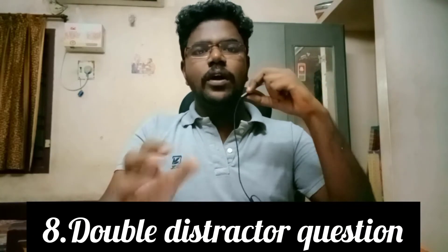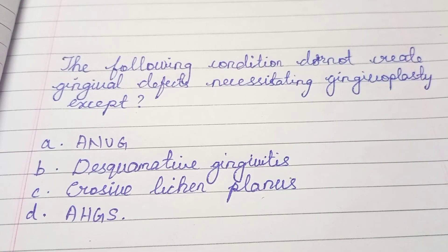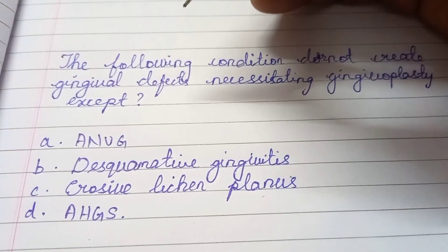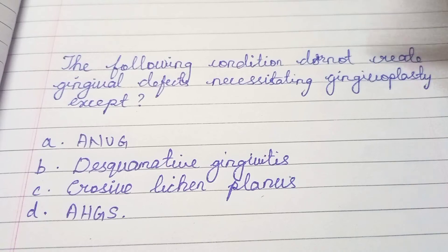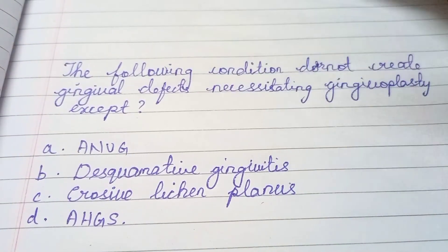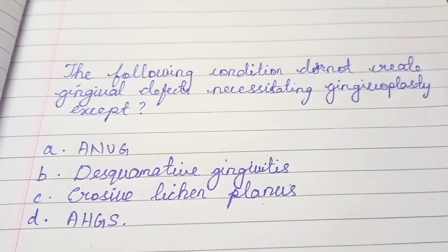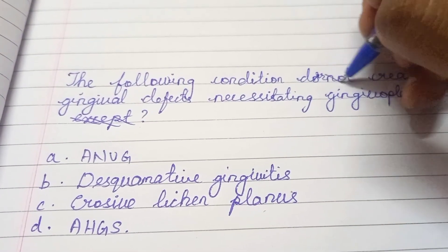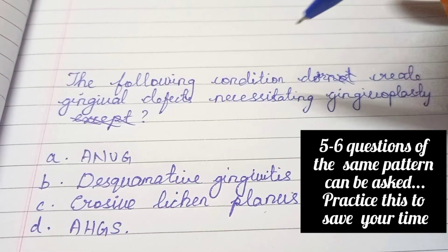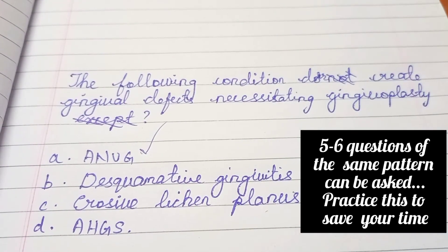Now, the double distractor technique. Consider this MCQ: 'The following condition does not create gingival defects necessitating gingivoplasty, except...' If you read it directly, it takes time because of multiple distracting words — 'does not,' 'except,' and 'all of the following.' What you do in a double distractor question is eliminate the odd word ('except') and the negative word ('not'). The simplified question now reads: 'The following condition creates gingival defects necessitating gingivoplasty.' You can now easily arrive at the answer: ANUG. Also be careful about single distractors like 'except' and 'other than.'